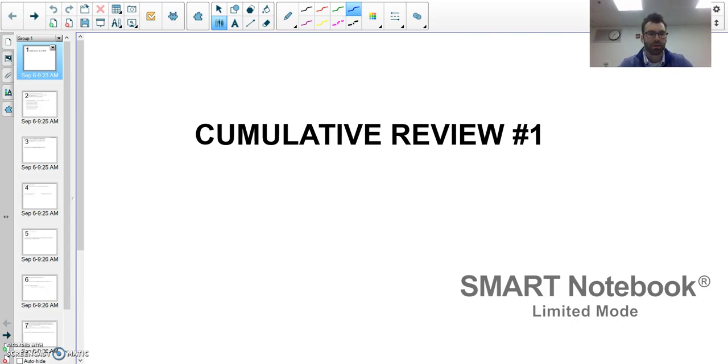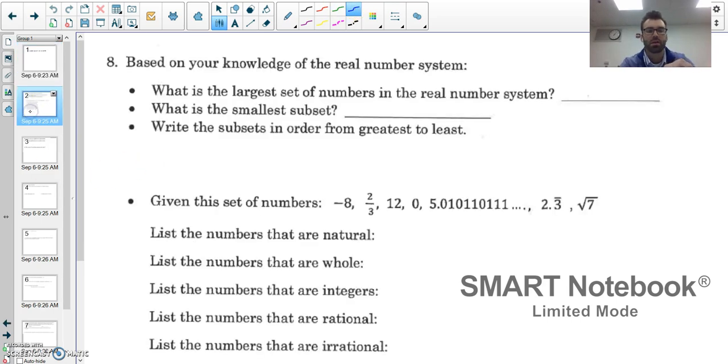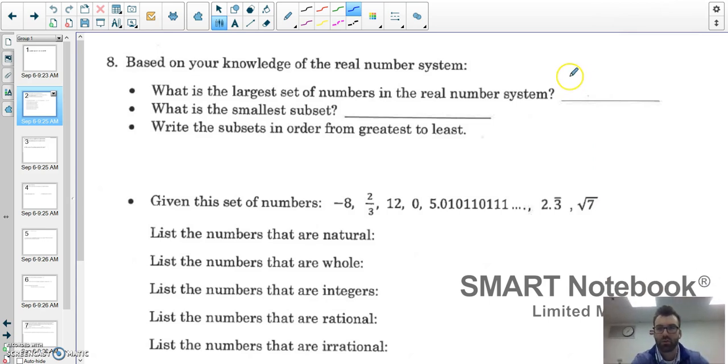Right, so we're going to finish up the cumulative review packet. Remember it's a great resource to help you if you are confused. I'm going to start off with question number eight. The first question asks what is the largest set of numbers in the real number system and you should have real numbers.